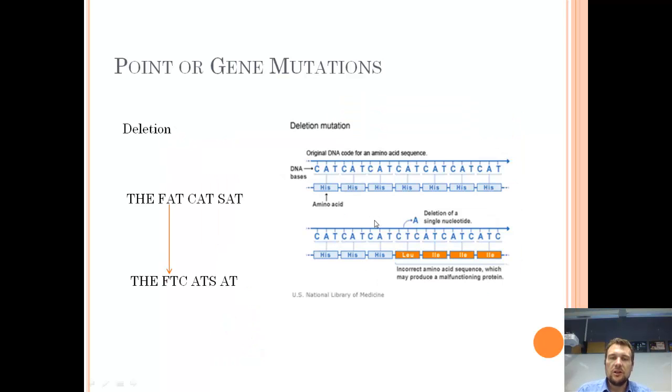But unfortunately, not all mutations are quite so easy-going. For example, deletion. Deletion is basically where a single base is removed. And because it's removed, all of the other bases shift along one. And because every single base is shifted along one, it means that each triplet after that mutation has occurred, after this point here, every single amino acid after that point is changed.